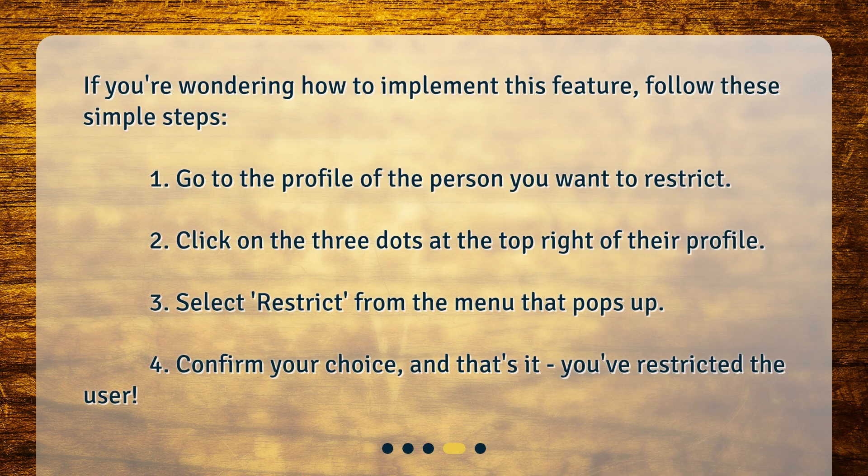If you're wondering how to implement this feature, follow these simple steps. 1. Go to the profile of the person you want to restrict. 2. Click on the three dots at the top right of their profile. 3. Select 'Restrict' from the menu that pops up. 4. Confirm your choice, and that's it — you've restricted the user.